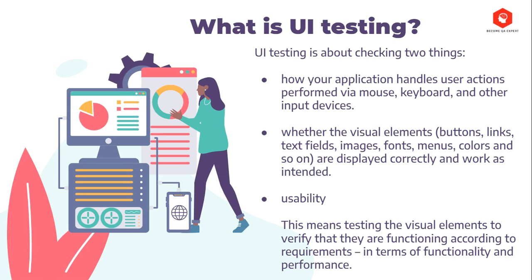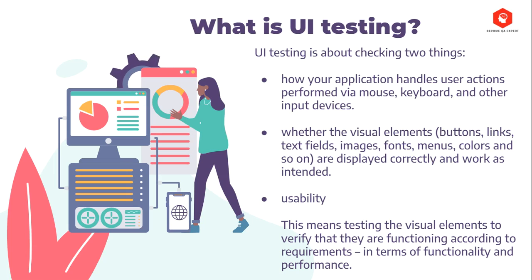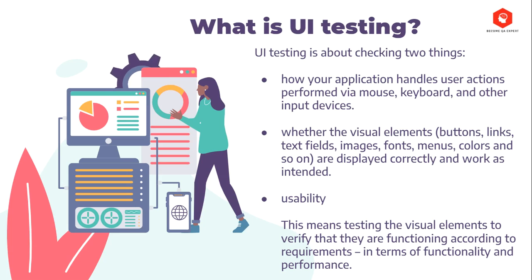UI testing is basically about checking two things. First, how your application handles user actions performed with mouse, keyboard, and other input devices. And another thing — we have to check whether the visual elements like links, buttons, text fields, fonts, colors, and stuff like that are displayed correctly and do they work as intended.